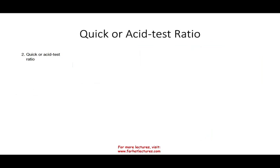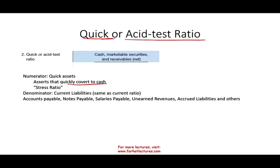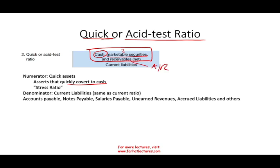The second ratio is the quick ratio, sometimes called the acid test ratio. How do you compute it? In the numerator you use quick assets — assets that can be quickly converted to cash. Sometimes this ratio is called the stress ratio. The denominator is the same as the current ratio: current liabilities. All that changed is the numerator, which now includes only three assets: cash, marketable securities (short-term investments), and net receivables (accounts receivable).